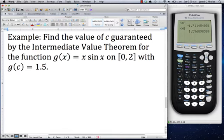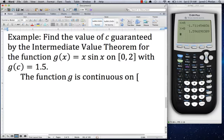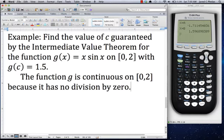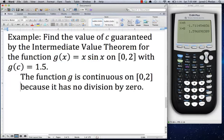The first step in this process is that we need to make sure that the function is continuous. We think about that, and our comment here is that the function g is continuous on the interval from 0 to 2 because it has no division by zero. There's nothing innately wrong with this function that's going to cause it to have any discontinuities. So we just sort of say, great, it's continuous.